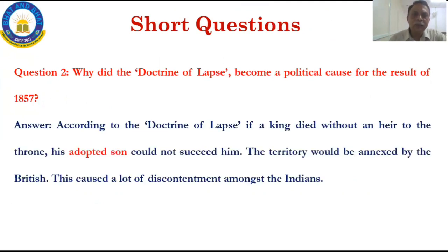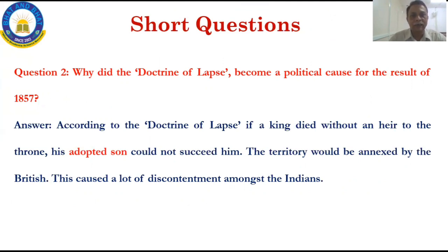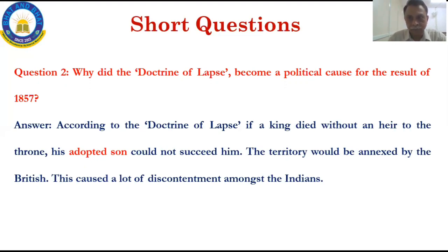Second question: why did the Doctrine of Lapse become a political cause for the revolt of 1857? According to the Doctrine of Lapse, if a king died without an heir to the throne, his adopted son could not succeed him — the territory would be annexed by the British. This caused a lot of discontentment among the rulers as well as the people of the kingdom, who were very unhappy with this British policy.